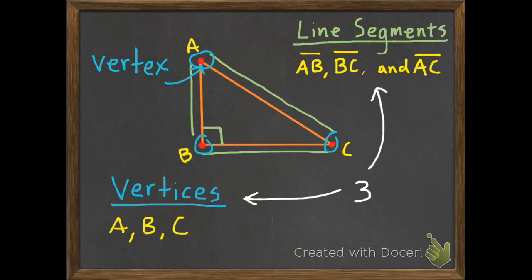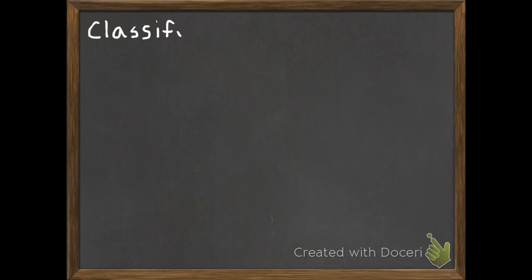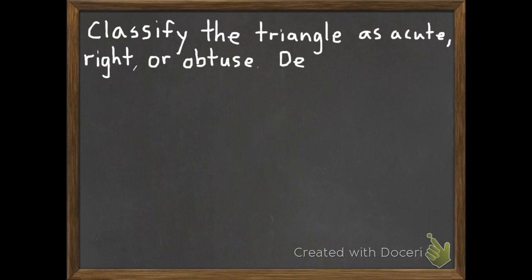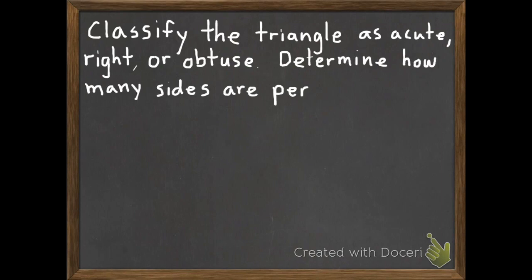Now that we're caught up on vocabulary, let's do my examples. Here are our instructions, which will apply to all the rest of the problems today. Classify the triangle as acute, right, or obtuse, and determine how many sides are perpendicular. The only triangles that have perpendicular sides are right triangles, and they have two. Acute and obtuse triangles do not have any perpendicular sides.